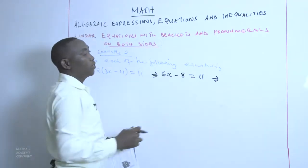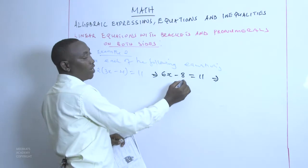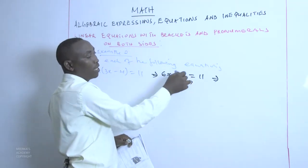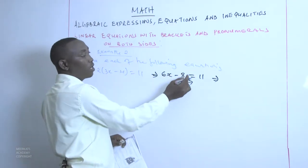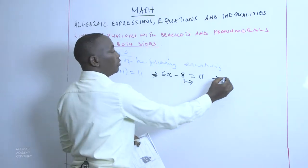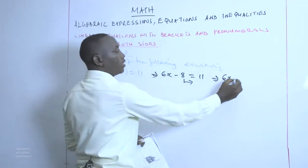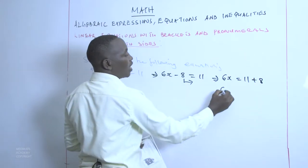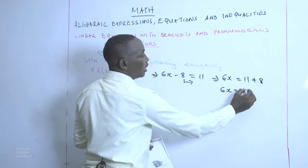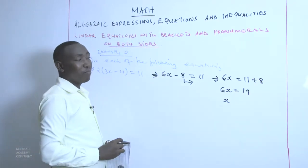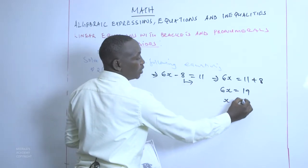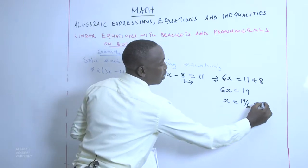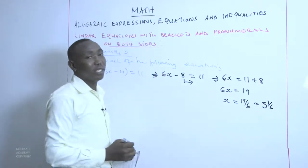The second step is to collect like terms. The like terms here are 8 and 11. We take negative 8 to the other side of the equal sign — whenever a figure crosses the equal sign, it changes sign, so negative 8 becomes positive 8. This gives us 6X equals 11 plus 8, which is 19. Therefore, we get the value of X by dividing both sides by 6, giving us 19 over 6, which is equivalent to 3 and 1 over 6 when simplified.